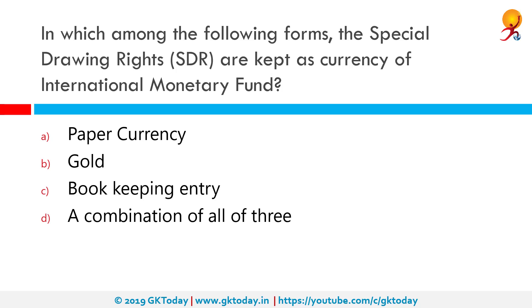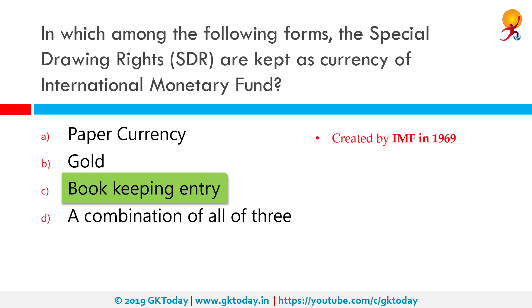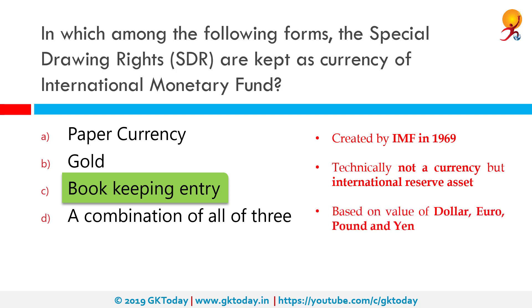In which form are Special Drawing Rights (SDR) kept as currency of the International Monetary Fund? The correct answer is Bookkeeping Entry. SDR was created by the IMF in 1969 as a supplementary international reserve asset. Technically, SDR is not a currency. The value of SDR is based on a basket of four major currencies: US Dollars, Euro, UK Pound, and Japanese Yen. From 1st October 2016, the Chinese Yuan became the fifth currency in the basket. IMF members who hold SDR are allowed to freely exchange their SDR with any of the four currencies in the IMF's basket. Generally, countries exchange their SDR with major currencies to meet their trade needs.